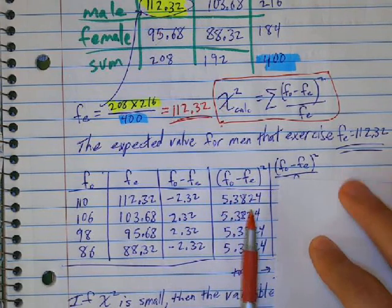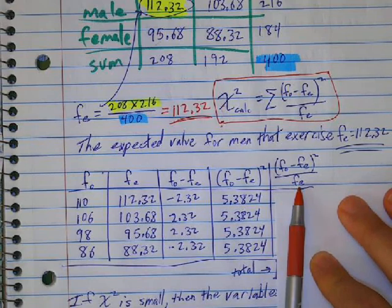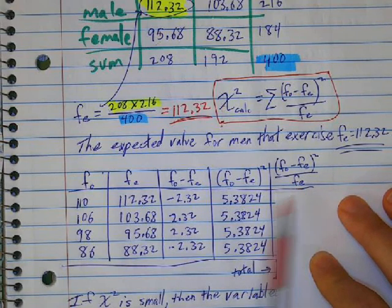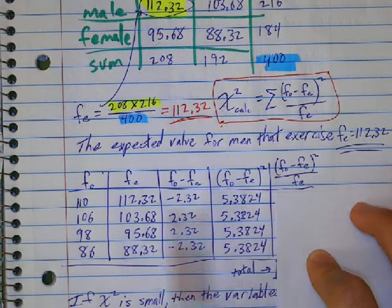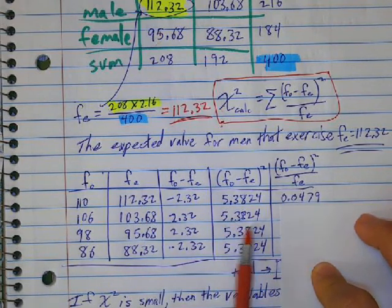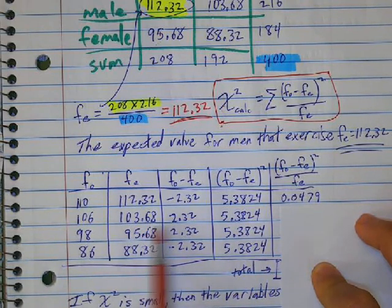And then I take all of these values here and divide it by the expected frequency. So I'm going to take this one and divide it by 112.32. And I'm going to get this. Take this and divide it by 103.68.